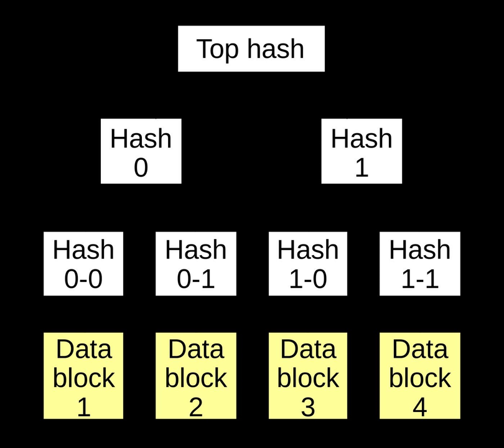Tiger Tree Hash: The Tiger Tree Hash is a widely used form of hash tree. It uses a binary hash tree — two child nodes under each node — usually has a data block size of 1024 bytes, and uses the cryptographically secure Tiger Hash. Tiger Tree Hashes are used in Gnutella, Gnutella 2, and Direct Connect P2P file-sharing protocols, and in file-sharing applications such as Vex, BearShare, LimeWire, Shareaza, DC++, and Valknut.